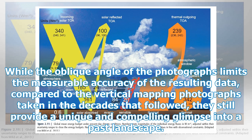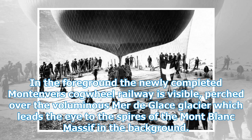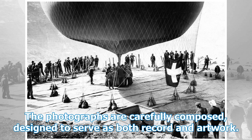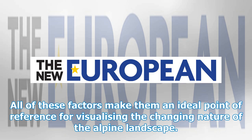While the oblique angle of the photographs limits the measurable accuracy of the resulting data compared to the vertical mapping photographs taken in the decades that followed, they still provide a unique and compelling glimpse into a past landscape. In one of Spelterini's images, the oblique aerial view taken at a sideways angle towards the horizon gives a sense of place partway between the familiar ground-level view and the high vertical perspective like that of a map. In the foreground, the newly completed Montenvers Cogwheel Railway is visible, perched over the voluminous Mer de Glace glacier, which leads the eye to the spires of the Mont Blanc massif in the background. The photographs are carefully composed, designed to serve as both record and artwork, and their oblique angle makes them less abstracted and more relatable, making them an ideal point of reference for visualizing the changing alpine landscape.